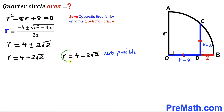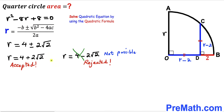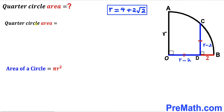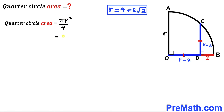The value r equals 4 minus 2√2 is not feasible since it gives a negative length for CD, so we reject it and accept r equals 4 plus 2√2. Now that we have our radius, let's calculate the area of the quarter circle. The area of a circle is π r squared, so the area of the quarter circle is π r squared divided by 4, and we substitute our r value.